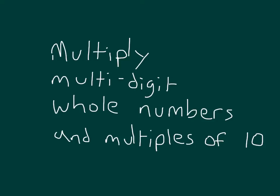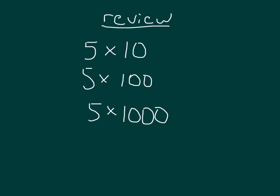Within this lesson, we'll work with multiplying multi-digit whole numbers and multiples of 10. Let's start with a little review. 5 times 10: 5 tens is 50. 5 times 100, or 5 hundreds, is 500. And 5 times 1,000 is 5,000.